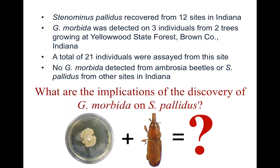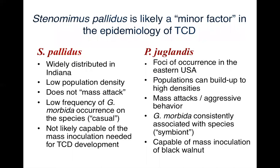We asked: what are the implications of this discovery? In reality, it's probably only a minor factor in the epidemiology of TCD for a number of reasons. Stenomimus pallidus has a low population density, in stark contrast to Pityophthorus juglandis, where populations build quite quickly. Geosmithia morbida is a weak plant pathogen, so a lot of inoculum needs to be transmitted to affect the host. Pallidus is not able to mount a mass attack on trees, and thus likely is unable to transmit enough inoculum to cause TCD. At best, this low frequency of Geosmithia morbida occurrence on this species is probably only a casual association.